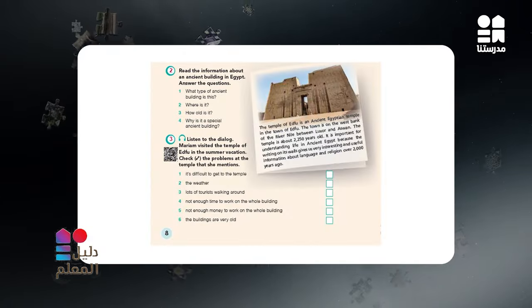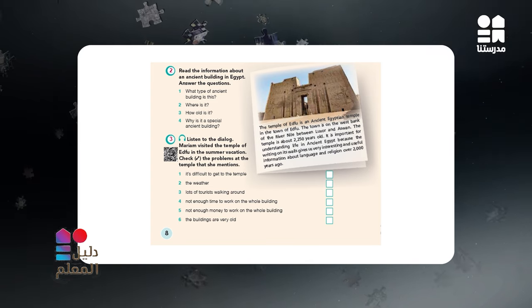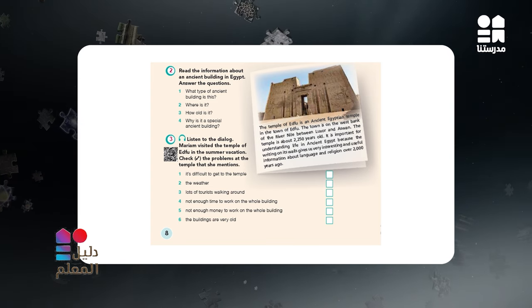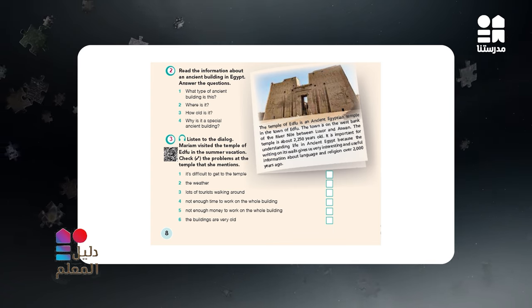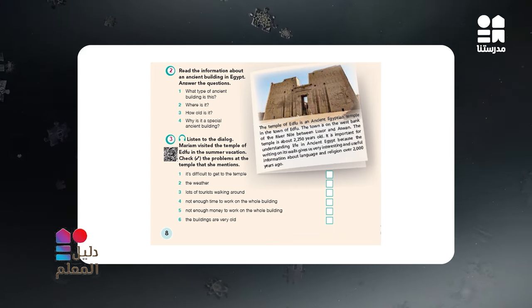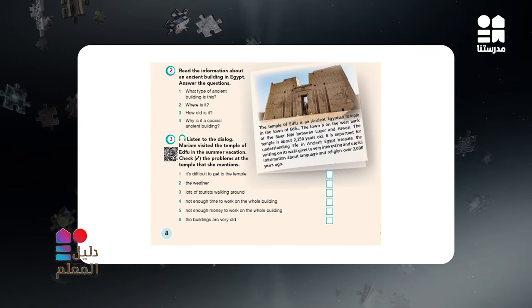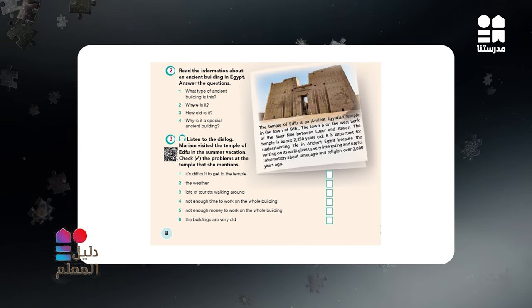Exercise 3 presents a model of the problem that ancient valuable buildings might face, providing a model for a problem which an old building has and how to solve this problem. Read through the problems and decide as a class which words in the choices are most important. After that, play the recording or scan the QR code for students to choose their answers.